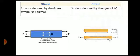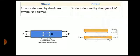Next difference: stress is denoted by the Greek symbol Sigma. Whereas strain is denoted by the symbol E. So these are the symbols used for denoting stress and strain respectively.